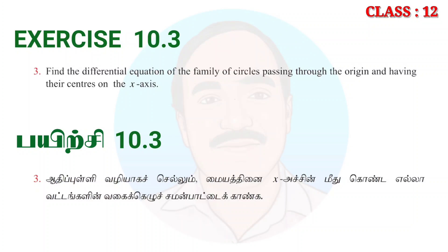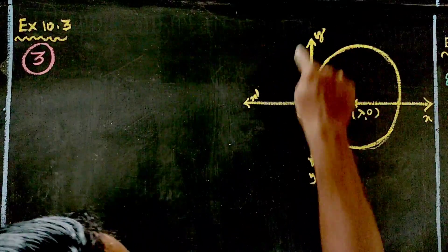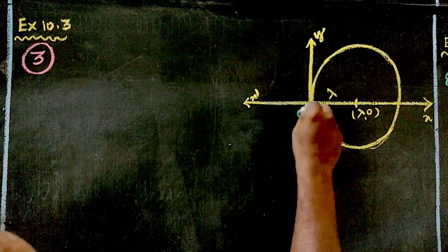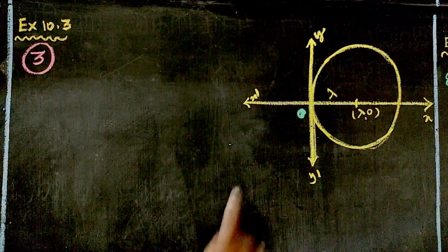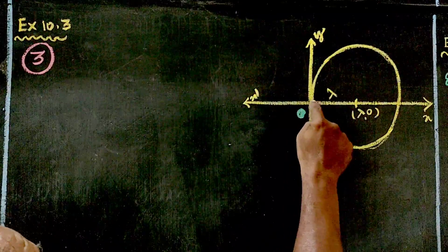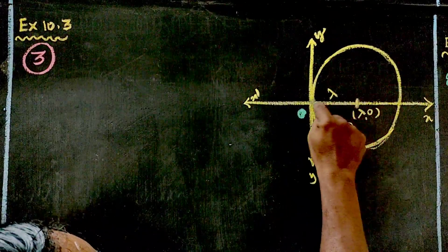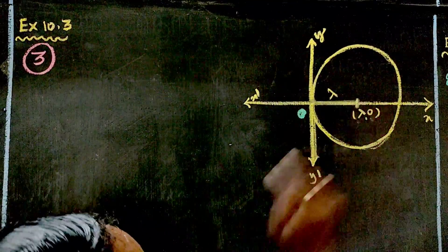The circle passes through the origin, and the center is on the x-axis. This is the x-axis, this is the y-axis, and this is the point of intersection. The center of the circle passes through (0,0), and since the center is on the x-axis, the center point is (λ, 0).